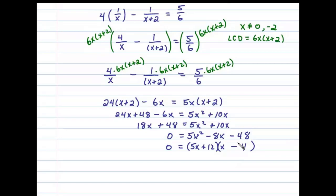We then set each factor equal to 0, so 5x + 12 = 0 or x - 4 = 0.